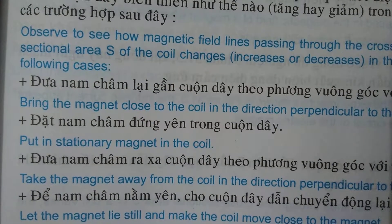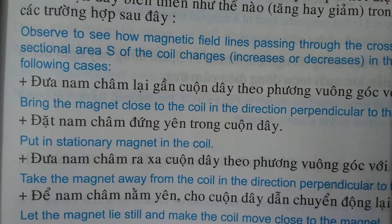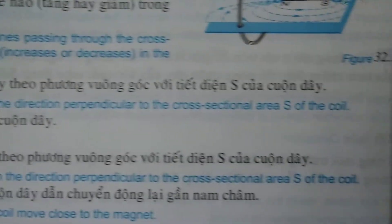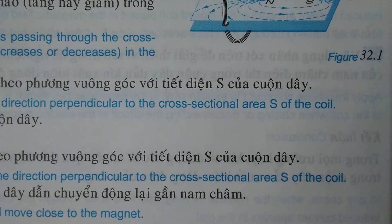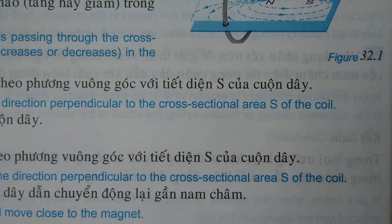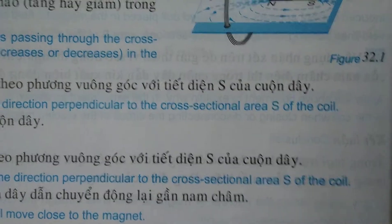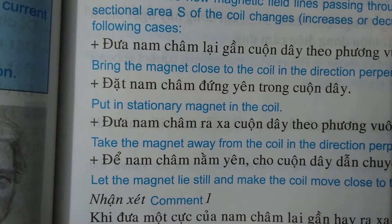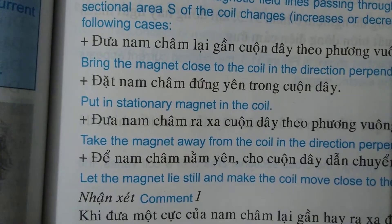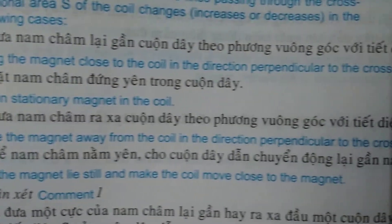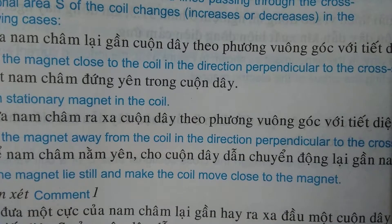Take the magnet away from the coil in the direction perpendicular to the cross-sectional area S of the coil. Also consider letting the magnet lie still and making the coil move close to the magnet.